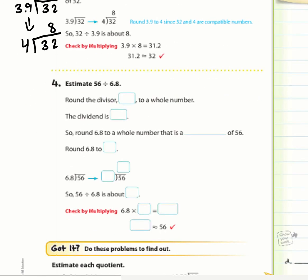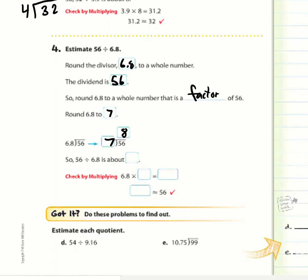Example 4: Estimate 56 ÷ 6.8. We round the divisor to 7, which is a whole number compatible with 56. So 56 ÷ 6.8 becomes 56 ÷ 7 = 8. We can check by multiplying: 6.8 × 8.